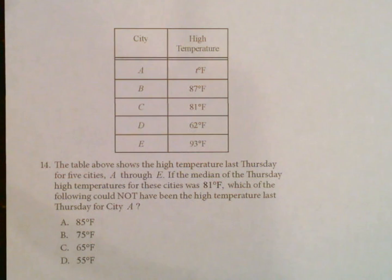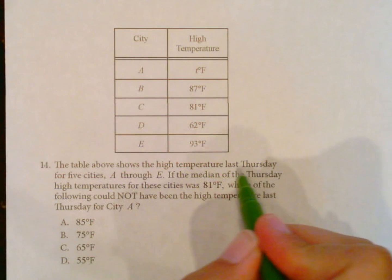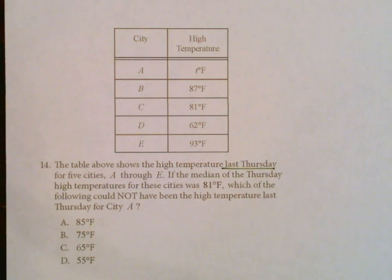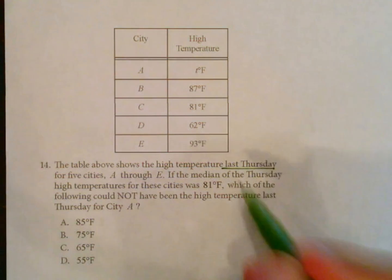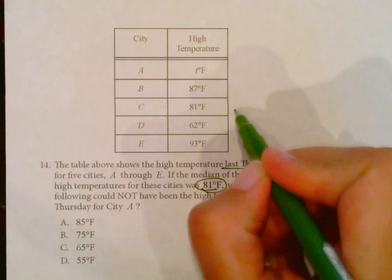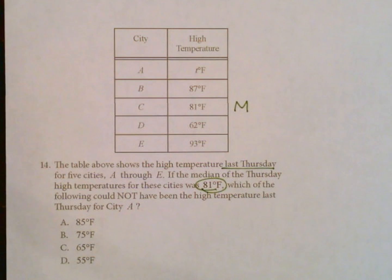The table shows the high temperature last Thursday for five cities A through E. If the median, or the middle value, of the Thursday high temperatures for these cities was 81, here's our median, which of the following could not have been the high temperature last Thursday for city A? So this one doesn't have one, we don't know what it is.